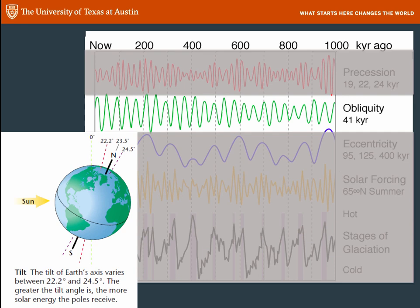Now, if you look at this obliquity cycle in green, you'll see that it's much more regular than precession in terms of time. But the magnitude of the change varies. So it doesn't always go all the way to 24.5 degrees. Sometimes the tilt tilts a little less or a little more on the overall range.